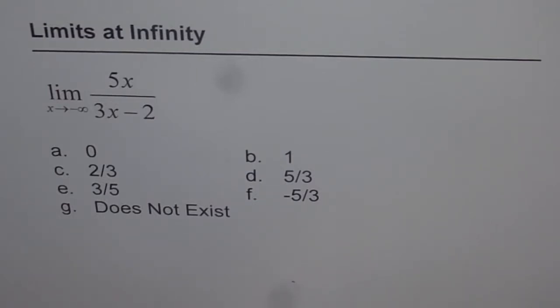Now, this is how I am going to approach this question. We need to find the limit of the function as x approaches negative infinity. The function is 5x divided by 3x minus 2, and we are given 7 choices here. Let us not get into the details of choices but figure out how to find the solution.